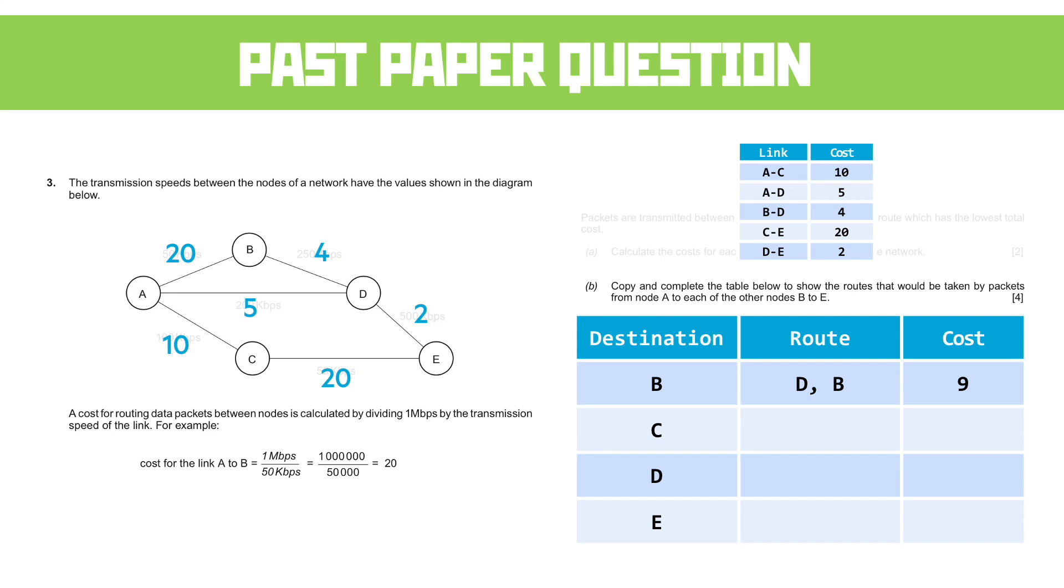C, the quickest way to C is directly from A, and that's 10, and so our route is just directly to C. D, same thing's true, we're going from A to D directly, it's given us a cost of 5, that's the shortest route.